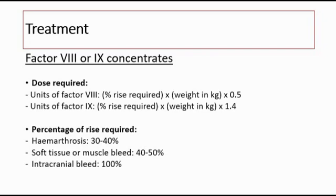Regarding how long to give the treatment: for haemarthrosis, we give it for 2–3 days. For soft tissue or muscle bleeding, we give for 4–5 days. Whereas for intracranial bleeding, we usually give for up to 7–10 days.